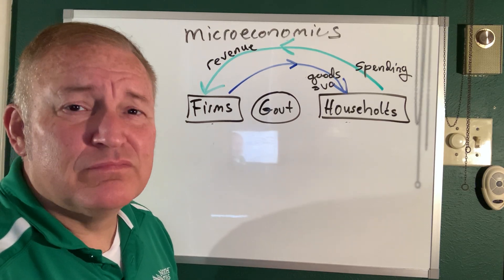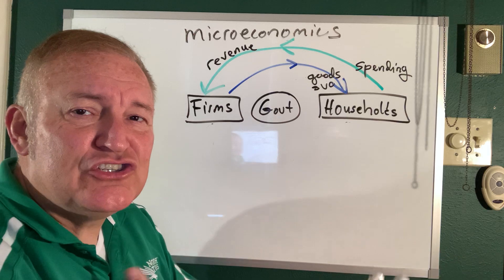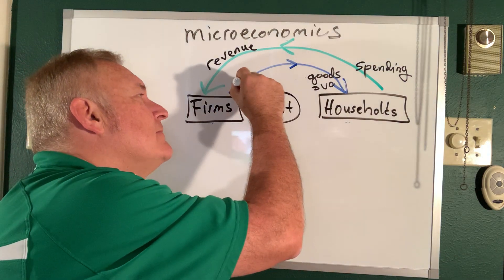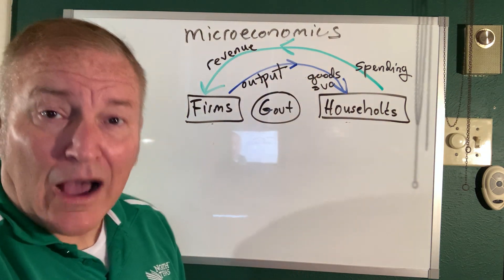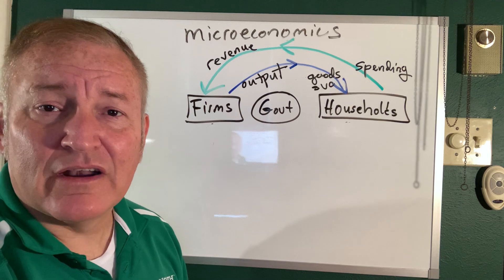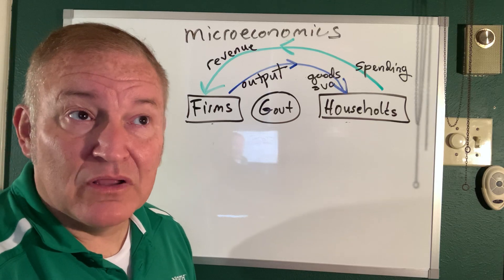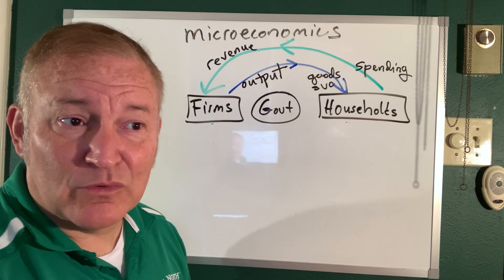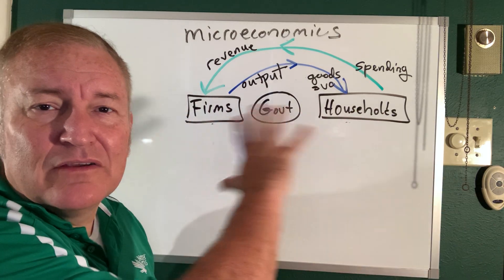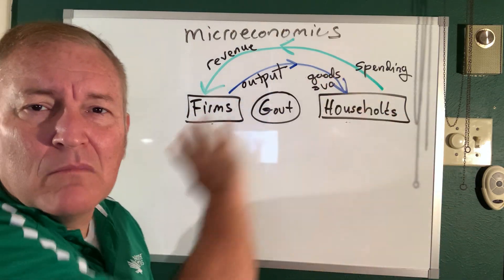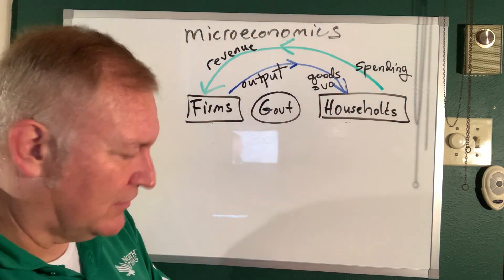Revenue is huge. And from the firm's perspective, what's the stuff you're exchanging for that revenue? That would be an output. Pretty straightforward — if you're a pizzeria, your output is pizza; if you're a snow cone stand, your output is snow cones; if you're Boeing Aircraft, your output is aircraft. So the flow of stuff and the flow of money look a little different from the firm's perspective, even though it's the same stuff.